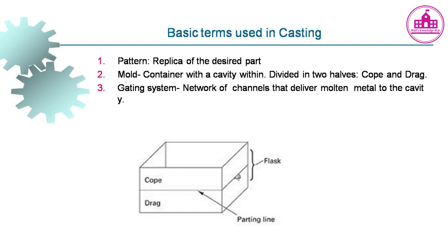Basic terms used in casting: A pattern is a replica of the desired part. A mold is a container with a cavity within, divided into two halves called cope and drag. The gating system is a network of channels that deliver molten metal to the cavity.